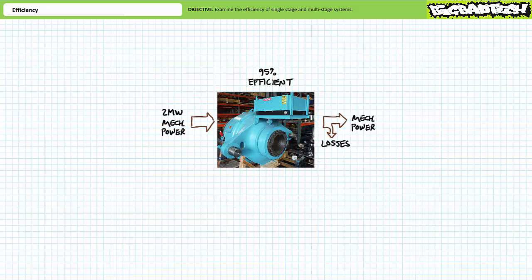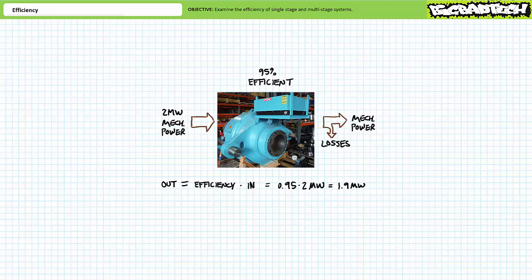Consider a gearbox known to be 95% efficient that consumes 2 megawatts of mechanical power input. Output is efficiency times input: 0.95 times 2 megawatts yields a usable output of 1.9 megawatts. The remaining 0.1 megawatts, or more appropriately 100 kilowatts, is directed towards losses. Check your work — given losses always occur, output is less than input, as expected. The missing 100 kilowatts is not lost; it goes towards non-useful output such as frictional losses, vibrations, heat, and/or sound.